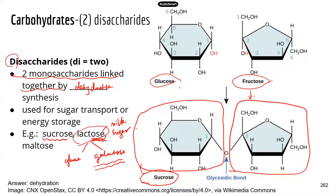Now, a lot of people are lactose intolerant — why is that? Disaccharides should be digested and broken down to monosaccharides in our body. But if somebody is lacking the enzyme that can break down lactose into its respective monosaccharides — glucose and galactose — then the lactose will remain as a larger disaccharide molecule, and that will cause gastrointestinal symptoms. If the person doesn't have that enzyme, they are lactose intolerant.